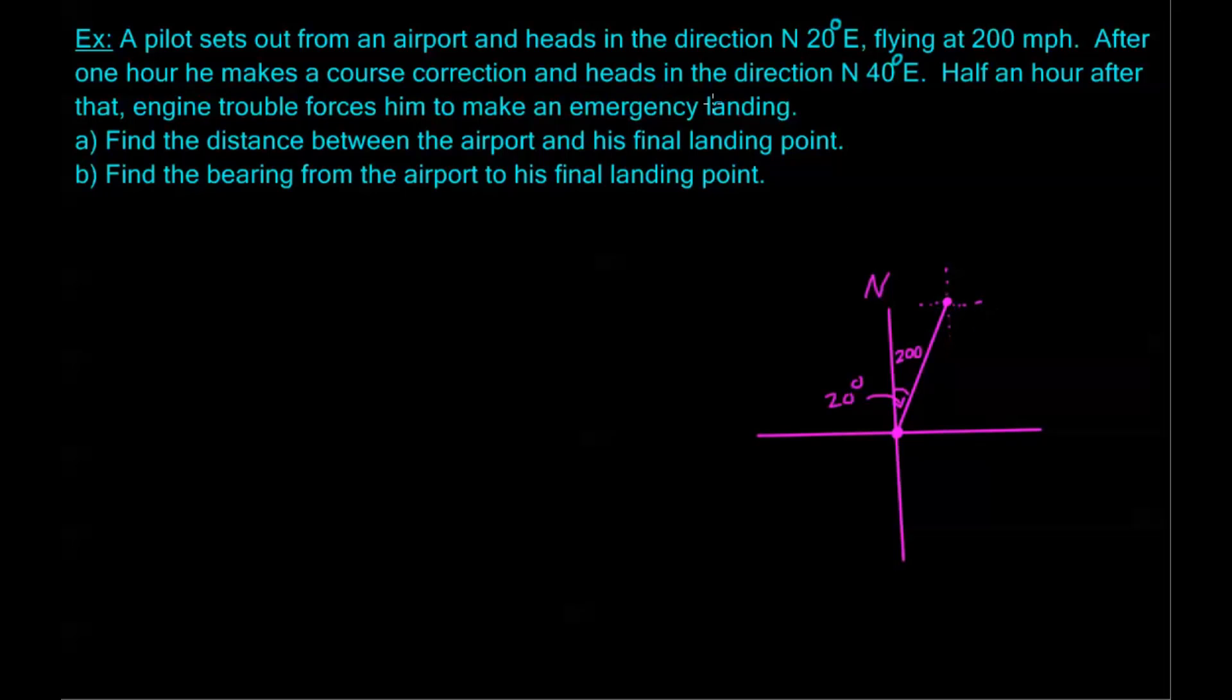We're going to go ahead and draw a little dotted navigation axis here. He's now traveling north 40 degrees east. So that looks a little bit more like this. So that 40 degrees, this is my north. That 40 degrees goes right here. Now he travels for a half an hour. So that means that the length of this line is 100 miles. You can see we're constructing our triangle here.